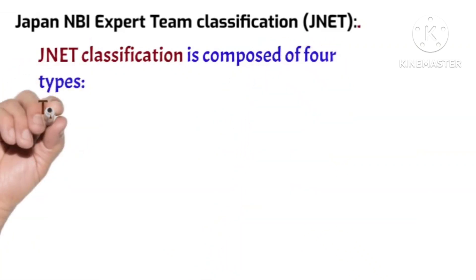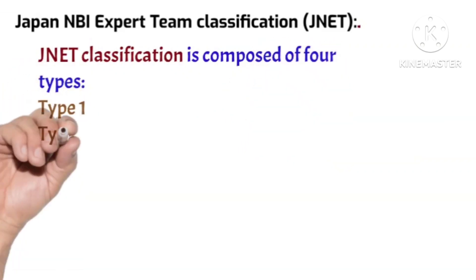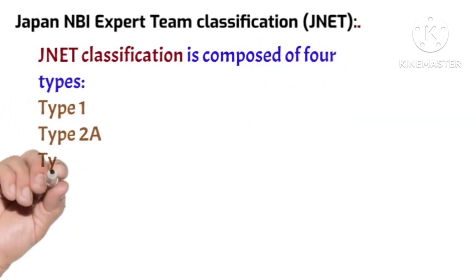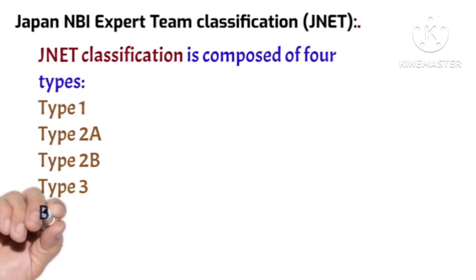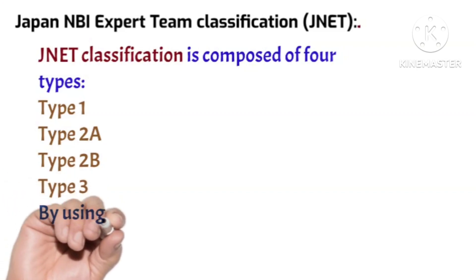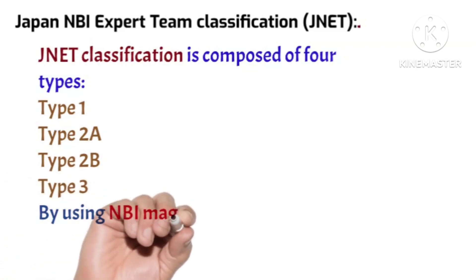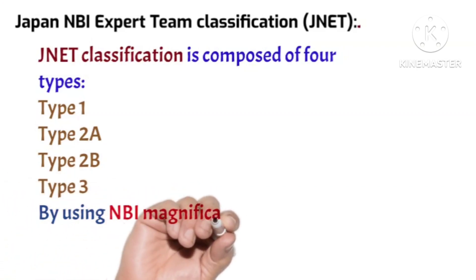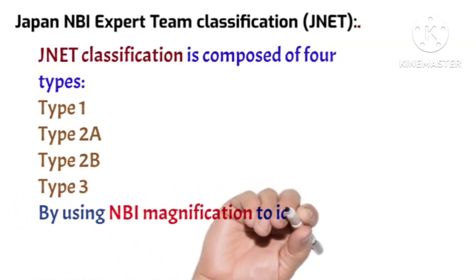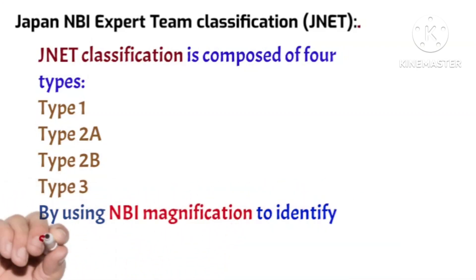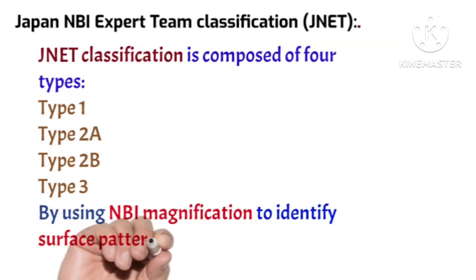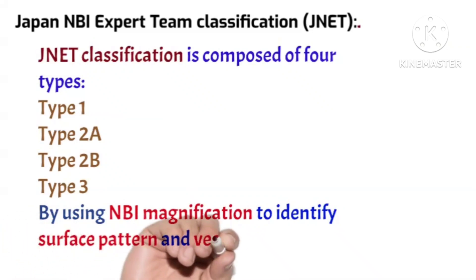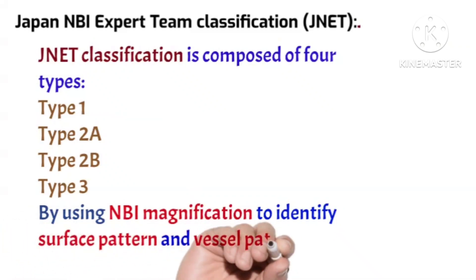JNET classification is composed of four types: Type 1, Type 2A, Type 2B, and Type 3, identified by using narrow band imaging magnification to assess surface pattern and vascular pattern.